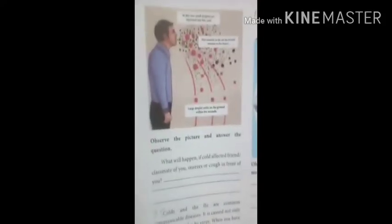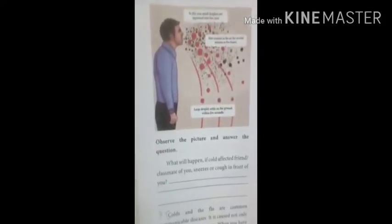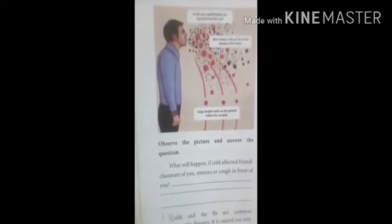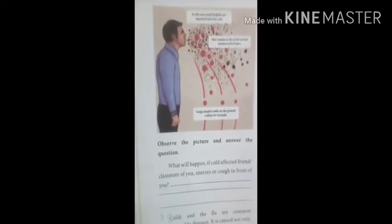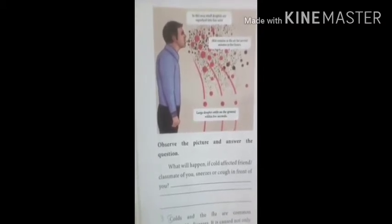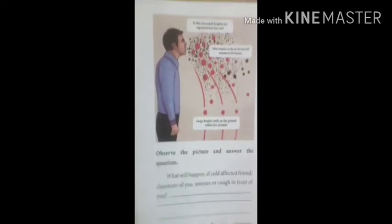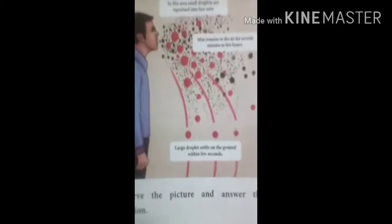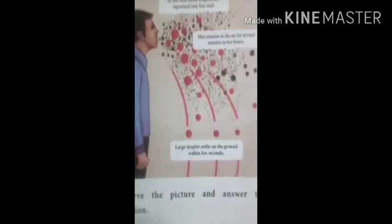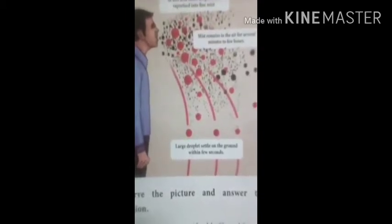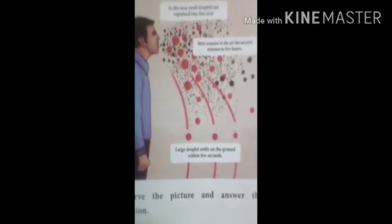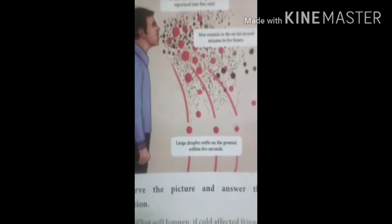Hi students, welcome to 7th standard science biology class. Please watch my previous video to understand this topic. Biology Unit 6: Health and Hygiene. The previous class covered health, hygiene, cleanliness, and personal hygiene. Today we are going to learn about how pathogens spread.